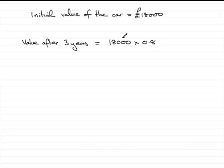After two years we would need to multiply this value by another 0.8. That's the value now after two years, and after three years we would need to find 80% or 0.8 of this amount, so we times by another 0.8.